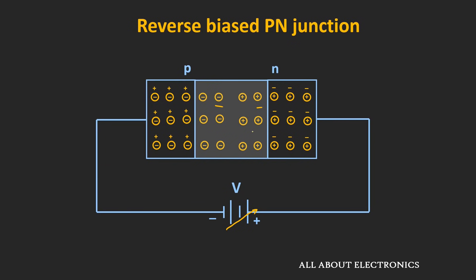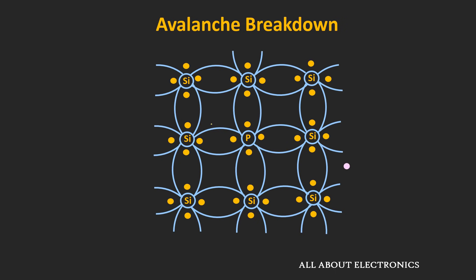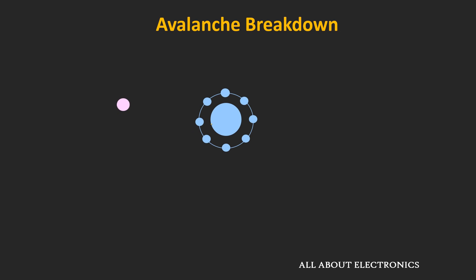While moving, these free charge carriers can collide with these silicon atoms. But once the applied voltage reaches the breakdown voltage, the kinetic energy gained by the charge carrier will be such that it can knock off the bound or valence electron of these silicon atoms. At the crystal level, the accelerated electron may collide with the silicon atom, and when it has enough kinetic energy, it can knock out a bound valence charge of that atom. So after the collision, instead of one electron, now we have two free electrons.